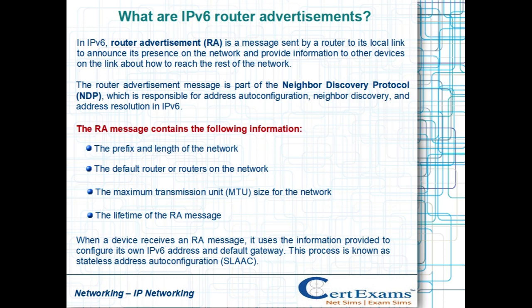In IPv6, a router advertisement (RA) is a message sent by a router to its local link to announce its presence on the network and provide information to other devices on the link about how to reach the rest of the network.